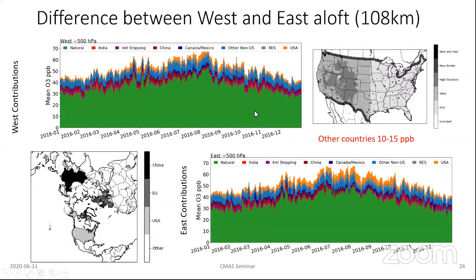Our focus is primarily on the U.S., so we like to look at contributions to the U.S. It's nice to split the country into two pieces: East and West. In the upper-right map, the West has all the high elevation areas, excluding the Appalachians which aren't as high. High elevation is darker gray, lighter gray is the West overall, and black represents the near-border areas. So we can think of the country as East/West, high/low elevation, and near-border/non-near-border.